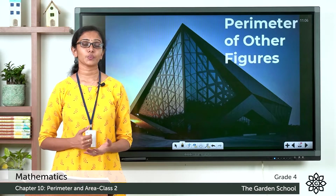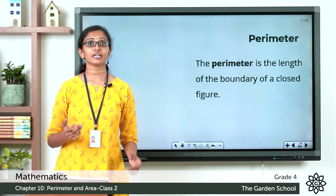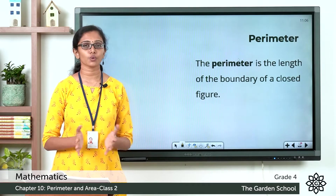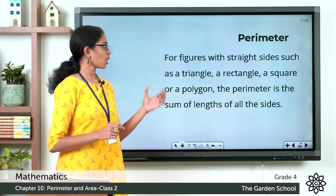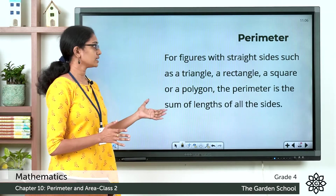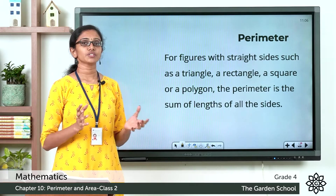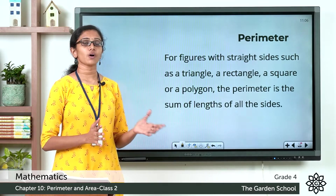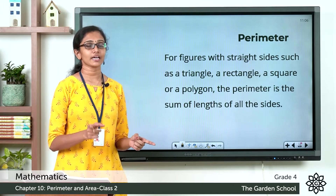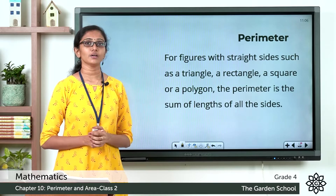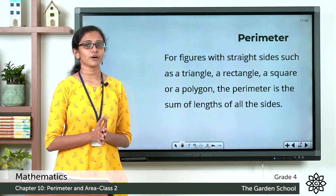In the previous class we learned about perimeter. Perimeter is the length of the boundary of a closed figure. We also learned that to find the perimeter of figures with straight sides — such as a triangle, rectangle, a square, or a polygon — you just add up the lengths of all the sides. We have seen how to find the perimeter of a square and a rectangle. Today we will learn how to find the perimeter of a triangle or some other polygon.